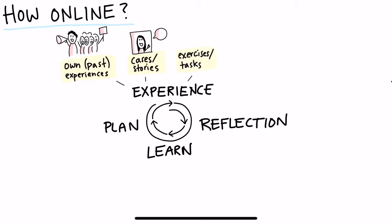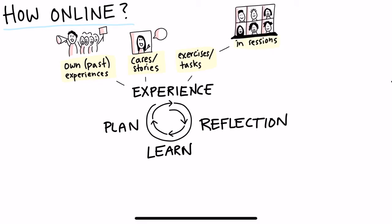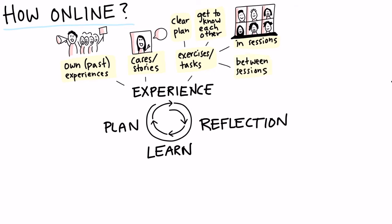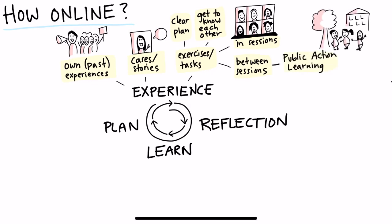You can also give participants exercises or tasks which they can do either in the session, for instance in breakout rooms. Doing group exercises as part of a session can be more challenging when participants are not physically together. Therefore, make sure that you have a clear plan for how they should do the exercises and also have time for them to get to know each other. Participants can also do exercises or tasks in between the online sessions, alone or in groups, and meet online or offline. They can do public action learning if they work on real issues in their own communities.